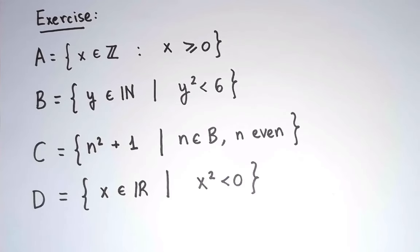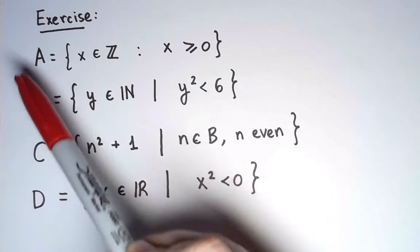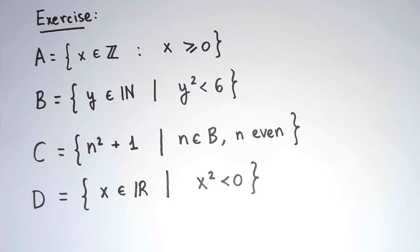To make sure you understand this notation, try this exercise. I have described 4 sets using set-building notation, but they all have an initial description. Can you tell me what each of these sets actually is?